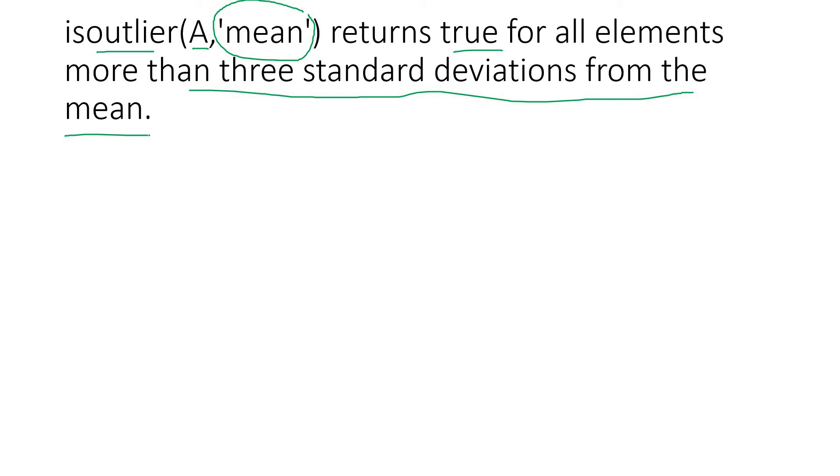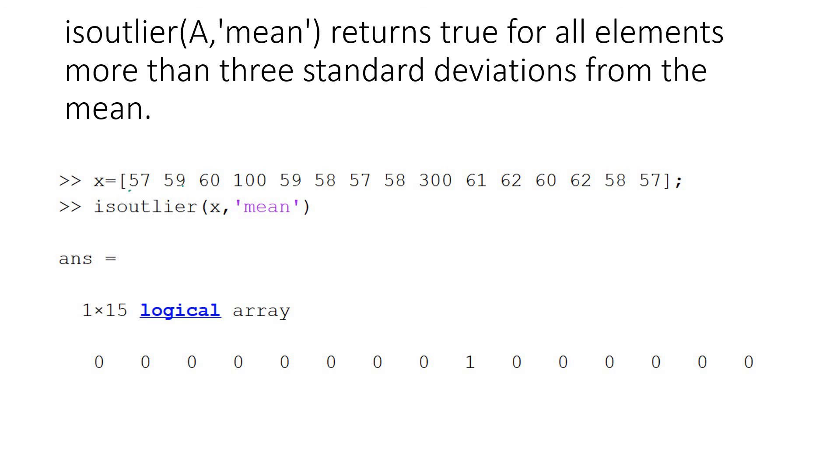True for all those elements which are more than three standard deviations from the mean means those are basically outliers. So using isoutlier we can easily get the index of the data which are outliers. For example, I have taken the first example where 300 is the outlier, and we are applying isoutlier(x, 'mean'). As we are not storing our logical array to some variable, by default it will be stored in ans. It will be giving output as a logical array 1x15, so 15 columns, one row. Here you will be getting one which is indicating at this particular position outlier is present.